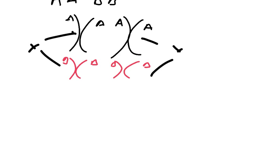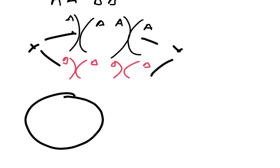So you end up with a gamete which has a chromosome with the A on it and a chromosome with the B on it. This is Mendel's first law, which is that of a pair of alleles, only one of those alleles goes into the gamete.